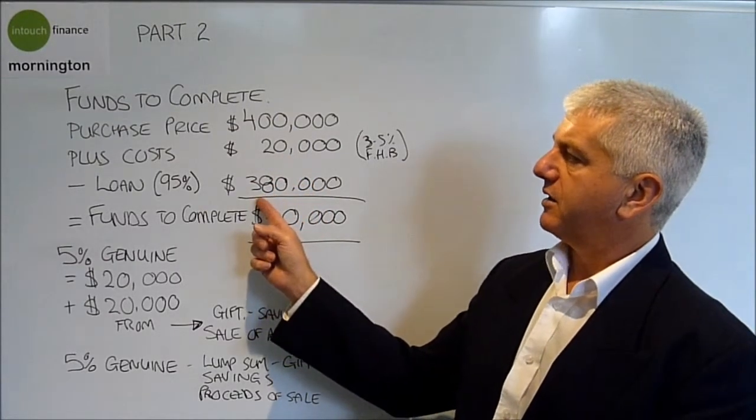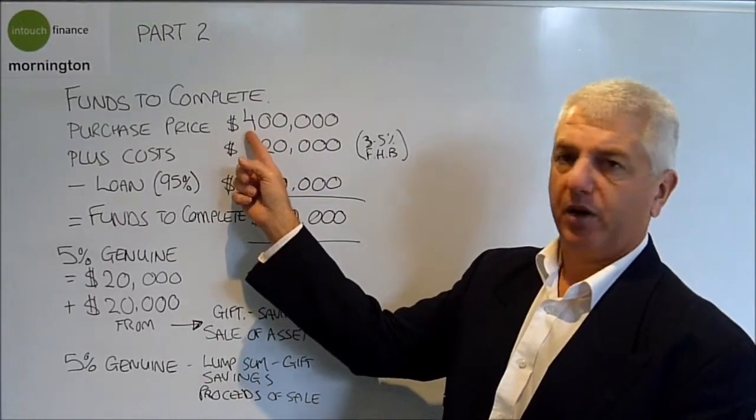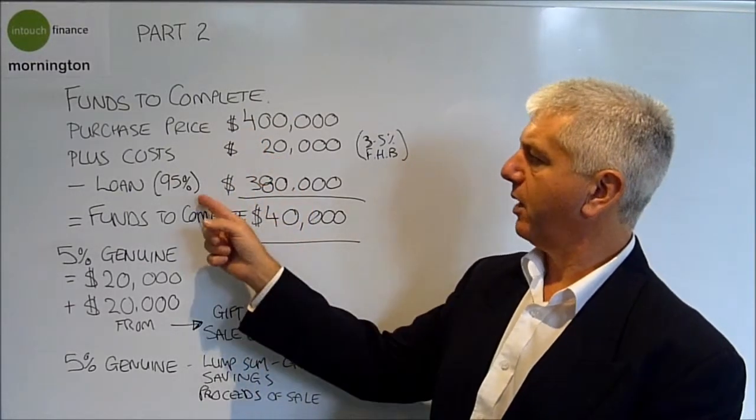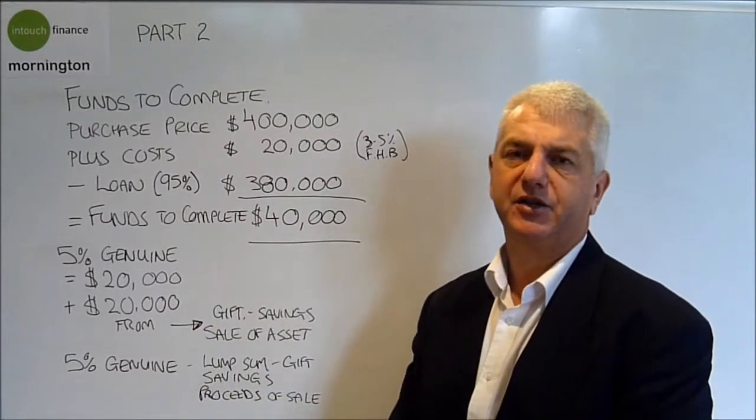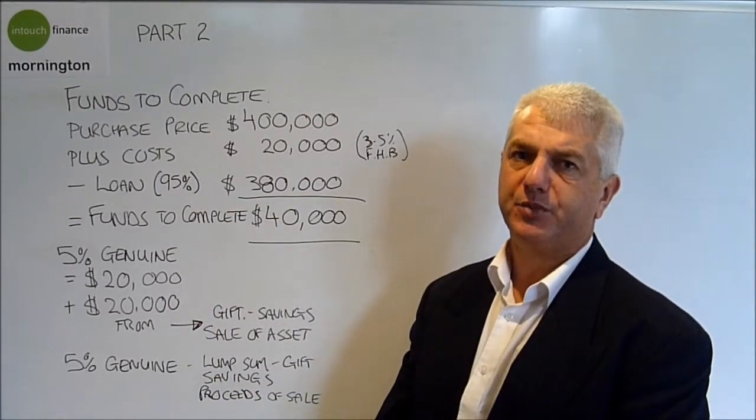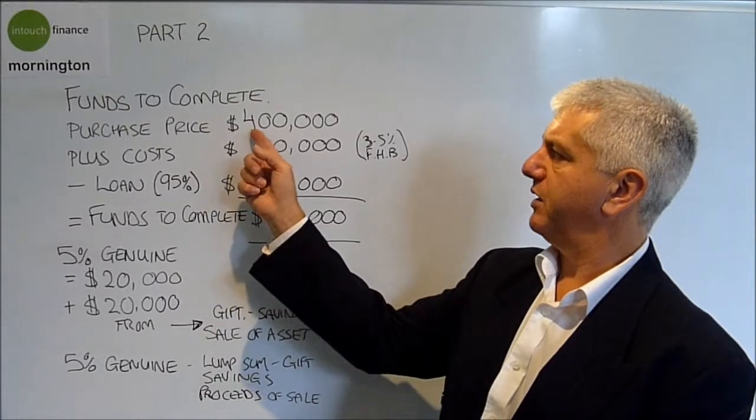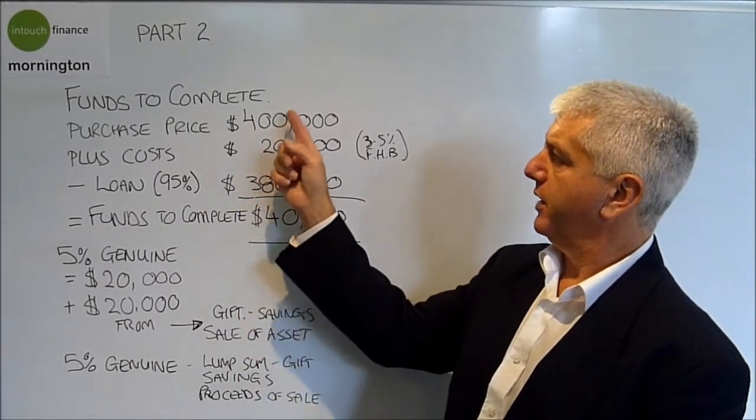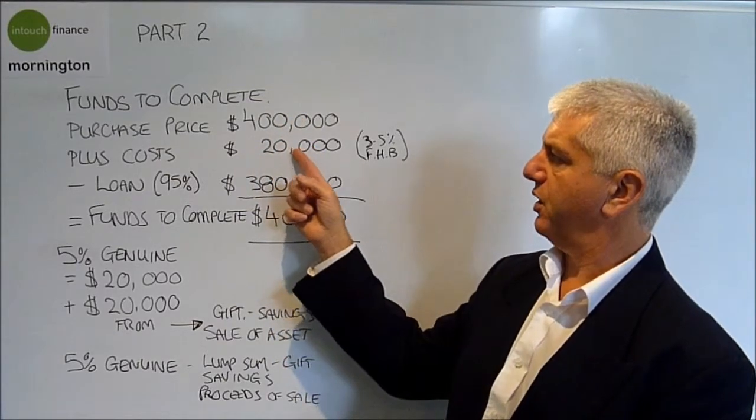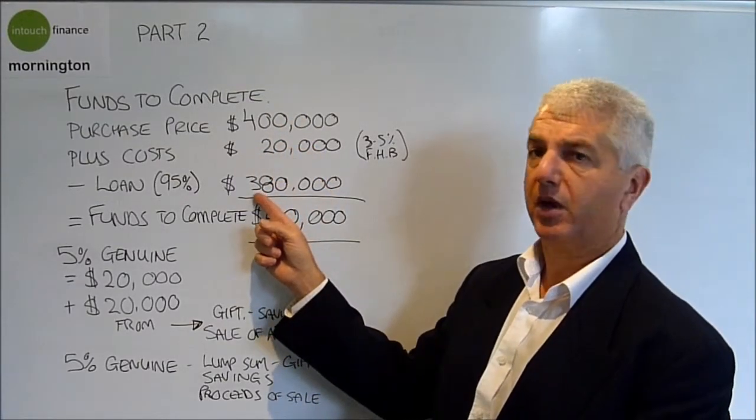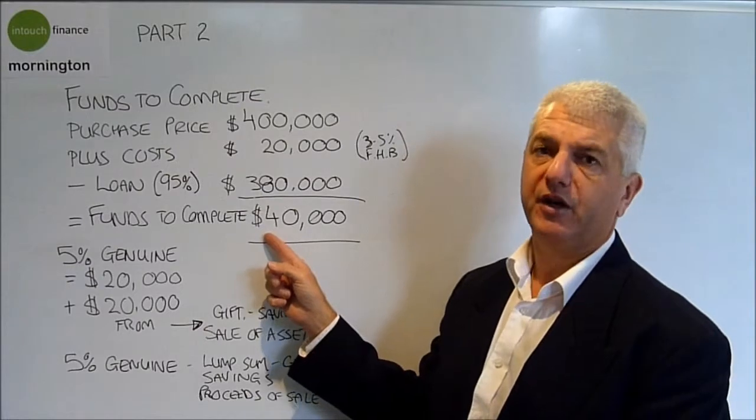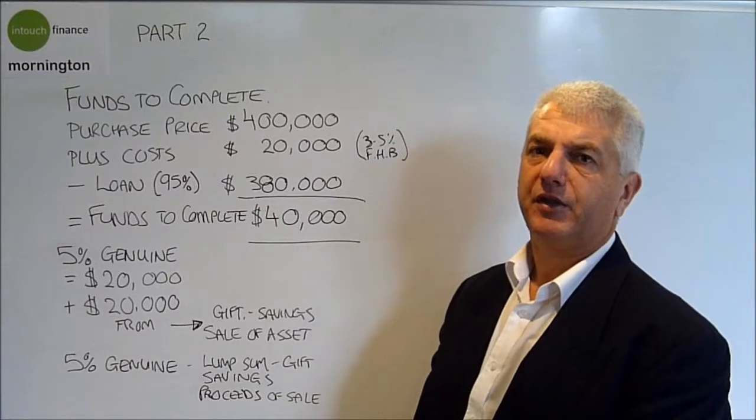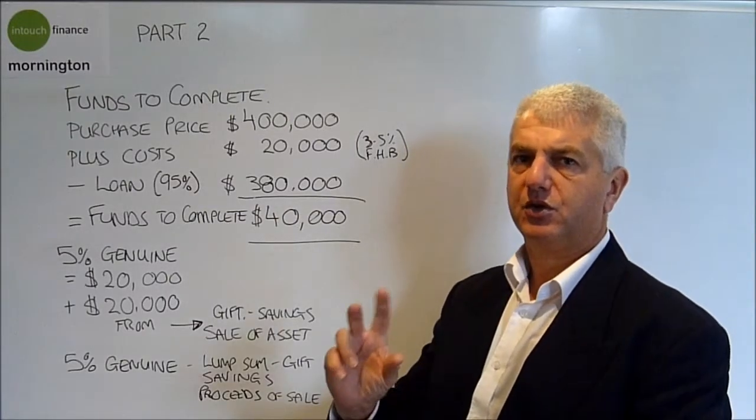We then take away. You can see we need $400,000 to buy the house and $20,000 in costs. The maximum loan amount for most lenders now is 95% of the purchase price. That's 95% of $400,000, which is $380,000. Very simply, we need the purchase price plus the costs, take away the maximum loan amount, and that leaves us with $40,000 as the funds to complete. That $40,000 is made up of two amounts.